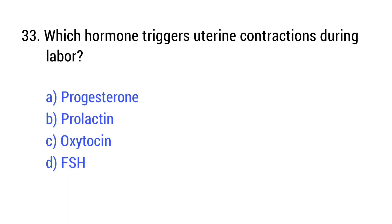Question number 33. Which hormone triggers uterine contractions during labor? The right answer is option C: Oxytocin.